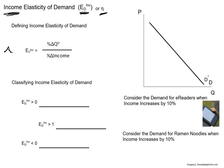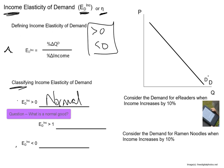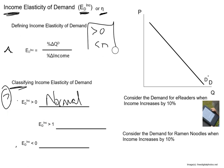The income elasticity of demand can be positive or negative, and whether it's positive or negative communicates something about how we classify the good. If we have an income elasticity of demand greater than zero, those are goods we refer to as normal goods. When the income elasticity is greater than zero, it means something about this ratio of the two percentage changes.